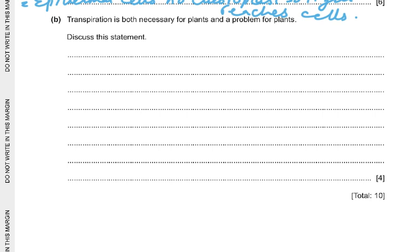Part B: transpiration is both necessary and a problem for plants — discuss. It is necessary because it provides leaves with water for photosynthesis, transports mineral ions from the roots to the leaves, provides plant cells with turgidity and support, and cools the leaf. The problem is that too much water is lost, which leads to wilting or death of the plant.